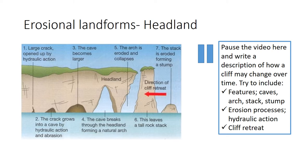There is not only the waves eroding through the processes of hydraulic action and abrasion, but there is also biological weathering happening to the top of the cliff. You can see all of the grasses and the plants that would have been breaking up the headland as well through their root systems.